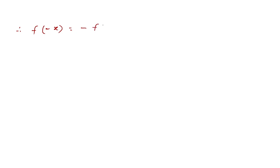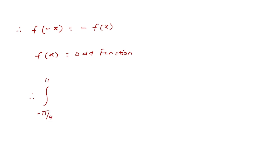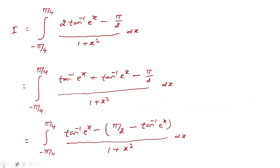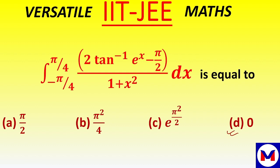Therefore f(minus x) equals minus f(x), meaning f(x) is an odd function. Therefore, the integral from minus pi by 4 to pi by 4 of f(x) dx equals 0. This is the required answer, and the correct option is option D.